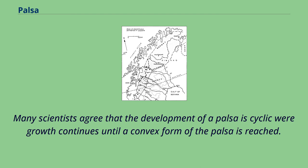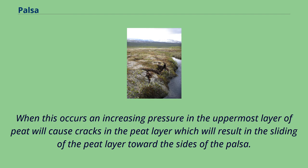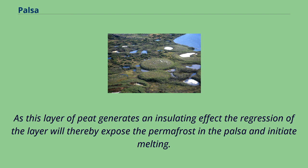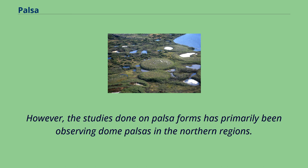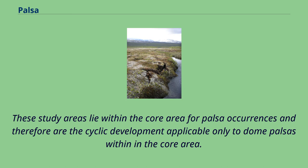Many scientists agree that the development of a palsa is cyclic, where growth continues until a convex form of the palsa is reached. When this occurs, an increasing pressure in the uppermost layer of peat will cause cracks in the peat layer, which will result in the sliding of the peat layer toward the sides of the palsa. As this layer of peat generates an insulating effect, the regression of the layer will thereby expose the permafrost in the palsa and initiate melting. The melting of the palsa is a normal part of the cyclic development, and it will be possible for new embryonic palsa forms to develop in the same area. However, the studies done on palsa forms have primarily been observing dome palsas in the northern regions. These steady areas lie within the core area for palsa occurrences, and therefore the cyclic development is applicable only to dome palsas within the core area.